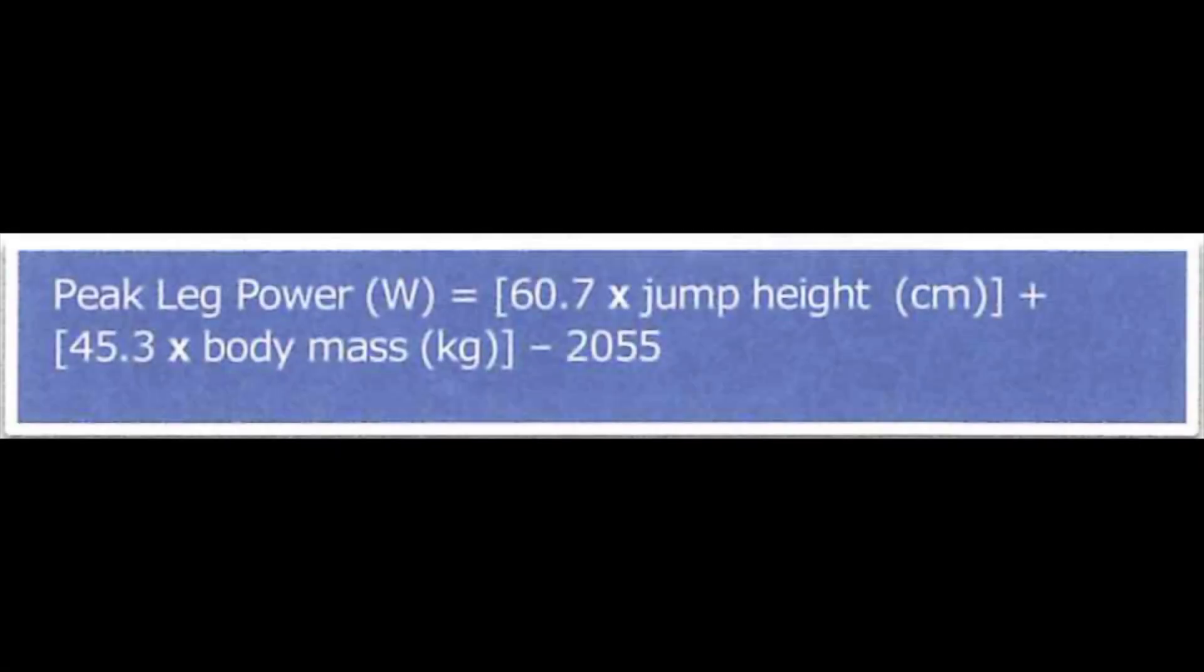You can then input their highest jump value into this formula to calculate their peak leg power in watts. Then you can use that to determine their associated health benefit rating.